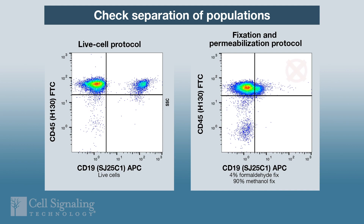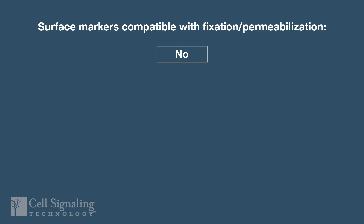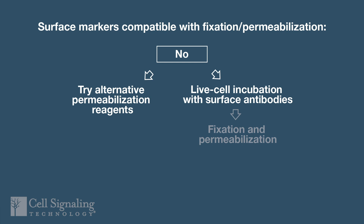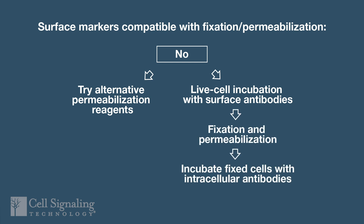If your surface marker antibody doesn't work, here are two things to try. First, consider alternative reagents for permeabilization. For example, if methanol isn't compatible with your surface markers, try switching to a detergent. Check with the manufacturer or test for compatibility with both your intracellular and extracellular targets. Second, if the surface marker antibodies are not compatible with fixed cells, split up your antibody incubation into two discrete parts. Incubate your surface marker antibodies with live cells first, then fix and permeabilize the cells, and finally incubate with intracellular antibodies. This approach often results in the best staining, but it can be tricky to manage the timing if your experiment also includes a stimulus or perturbation.